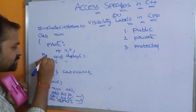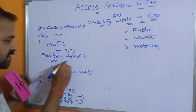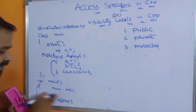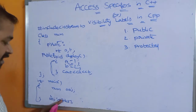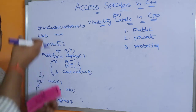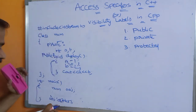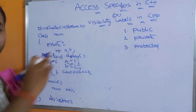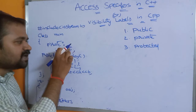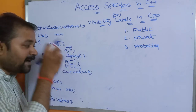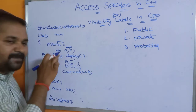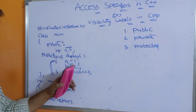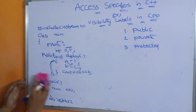So it is better to define the display function under the public section. With a and b as private members and display as a public member function, we initialize a=1 and b=2 inside display, then call obj.display from main. Since display is public, it is accessible from anywhere. Inside display we can access the private variables a and b because display is a public member function of the same class. So the output will be 1 and 2.